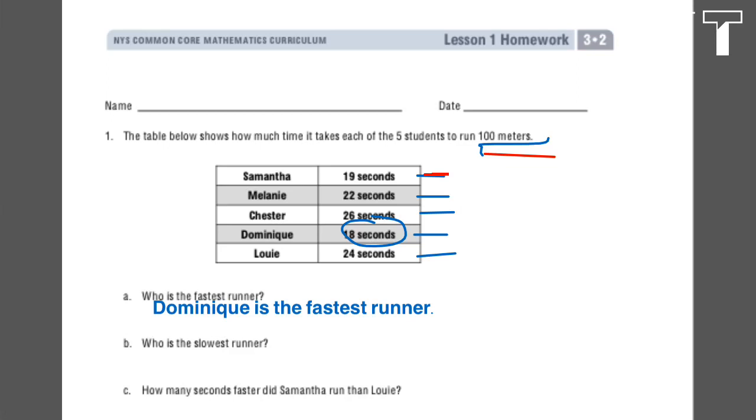So if we go back through our values up here, we'll see that it took Chester 26 seconds. So who is the slowest? Chester is the slowest.